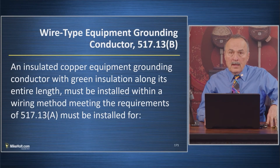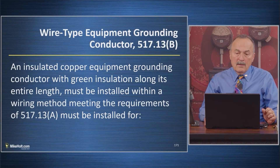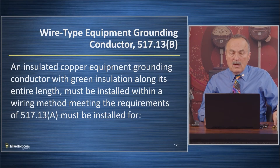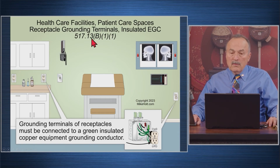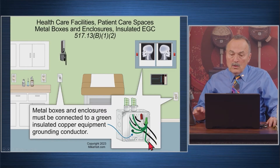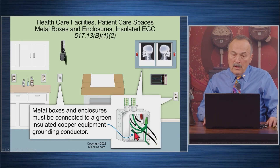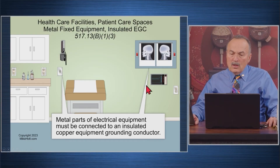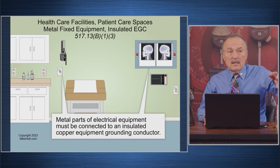Section B says: an insulated copper equipment grounding conductor with green insulation along its entire length must be installed within the wiring method described in 517.13A. That equipment grounding conductor must be connected to the grounding contacts of a receptacle — that's 517.13B1. It must also be connected to the metal box — that's 517.13B1-2. We have to bring an insulated equipment grounding conductor to the box.